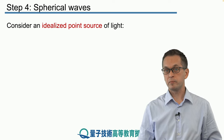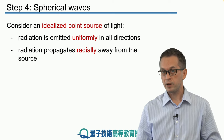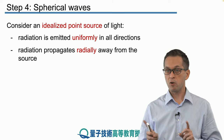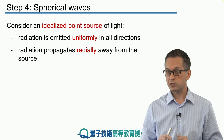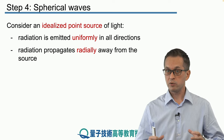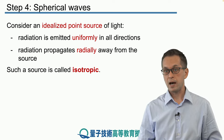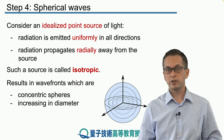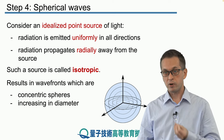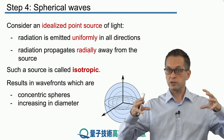Now consider an idealized point source of light. When we say it's idealized, we mean the radiation is emitted uniformly in all directions with no preferred direction — such a source is also called isotropic. If we place this idealized isotropic point source at the center of our coordinate system, the waves produced are concentric spheres increasing in diameter.